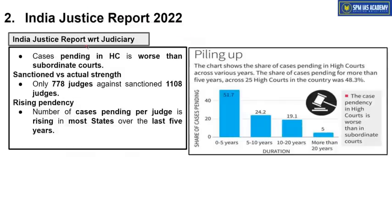The India Justice Report also mentions pending cases in the Indian judiciary — there are a lot of pending cases. In High Courts, there are many pending cases, and the main reason behind this is the vacancy of many judge positions. Approximately 40% seats are vacant; out of 1,108 judges, only 778 judges are working right now. Moreover, the pendency of cases is rising in many states over the last five years.